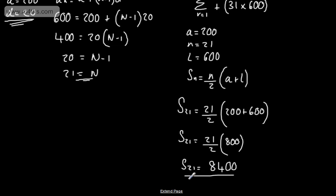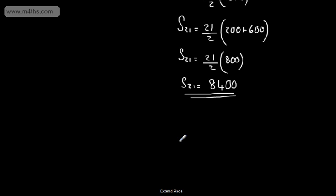So all I'm going to do is take this now and add it to 31 times by 600. So if we do that, what we're going to have is 8400, and if I multiply 31 by 600, I'm going to get 18600.